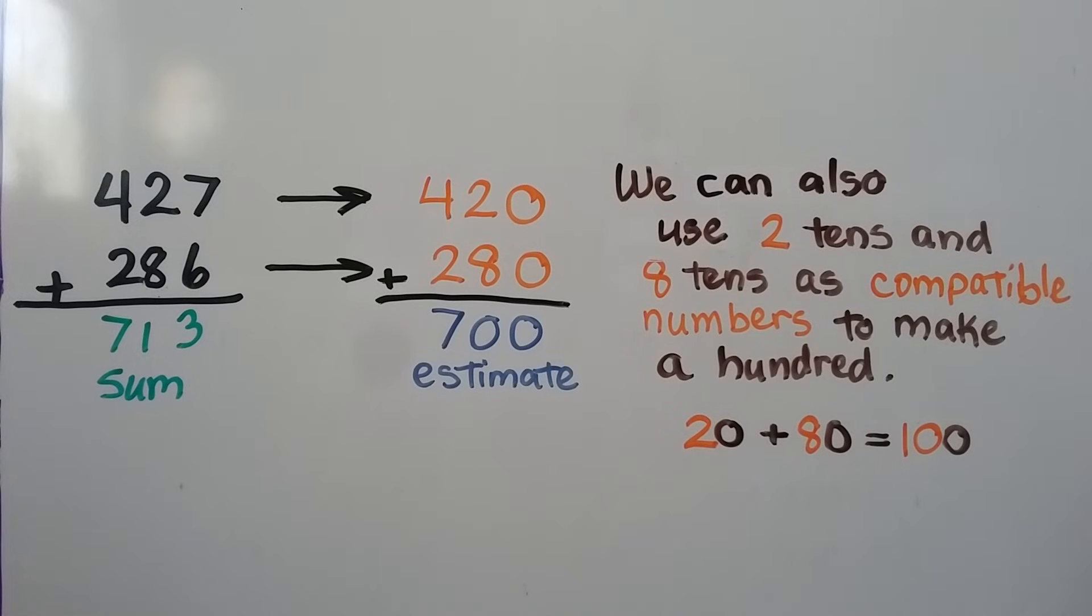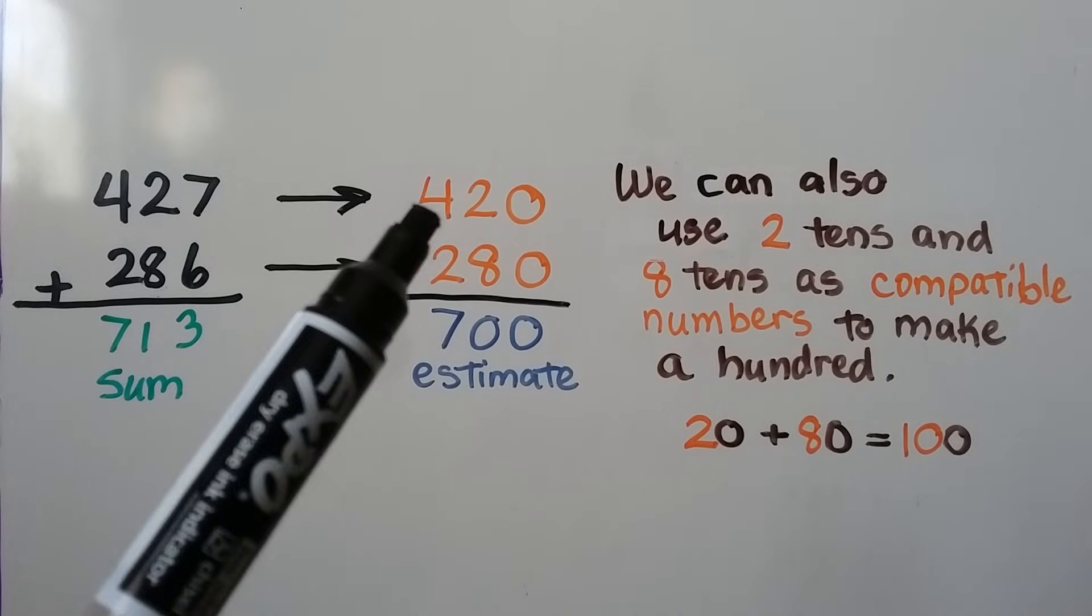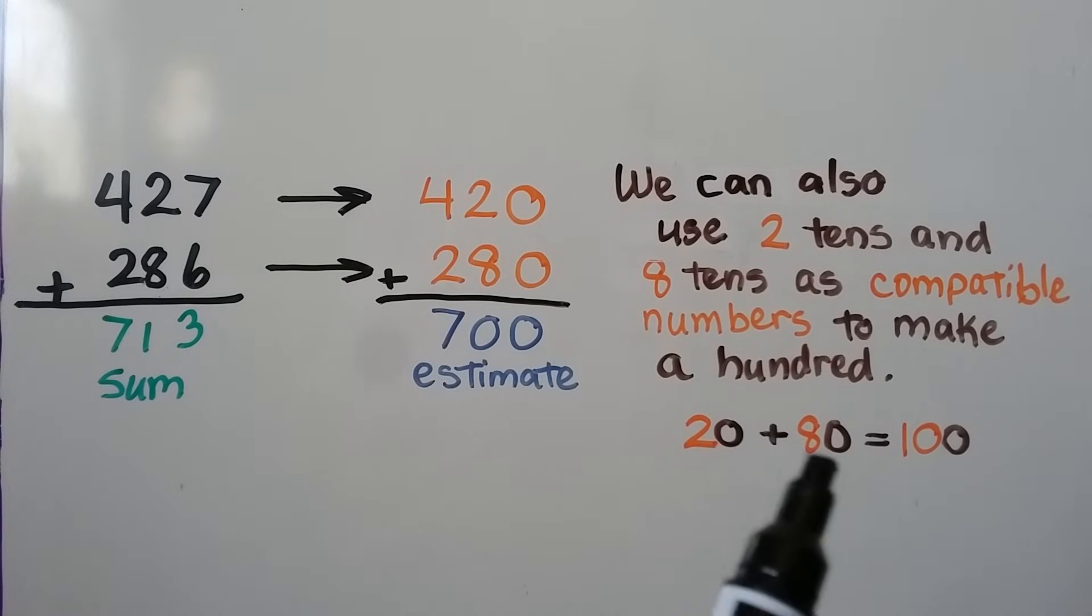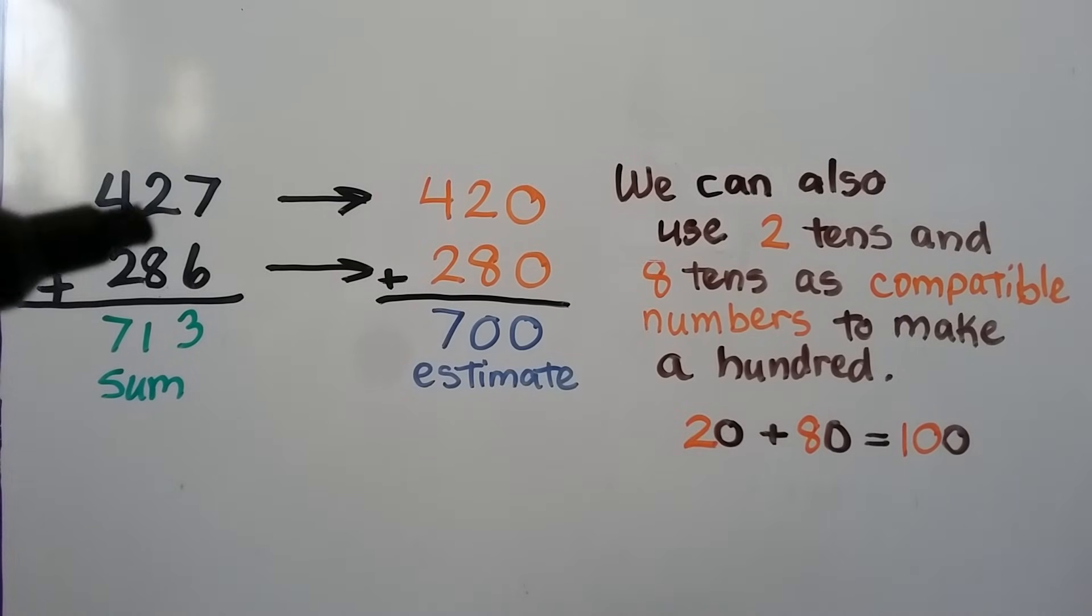We can also use two tens and eight tens as compatible numbers, because 2 plus 8 equals 10, 20 plus 80 equals 100, and we could have just turned that into a 20 and an 80, and then added 420 plus 280 to estimate about 700. That would be close to the actual sum.